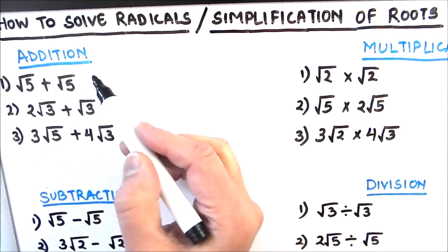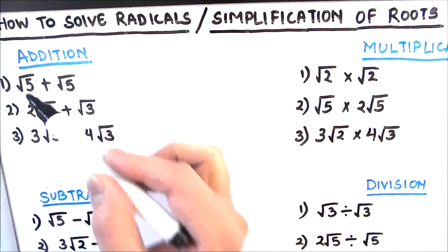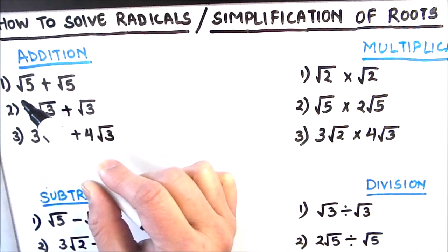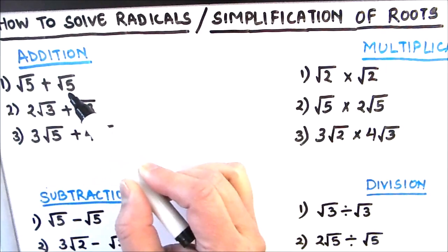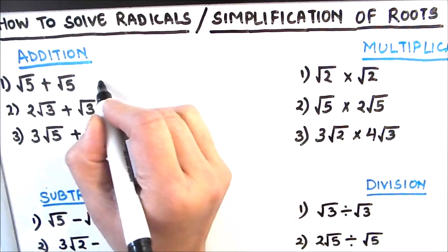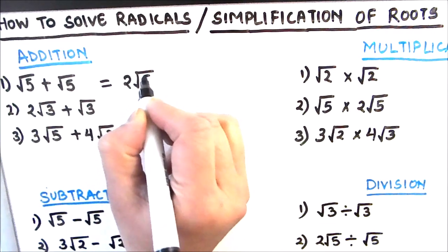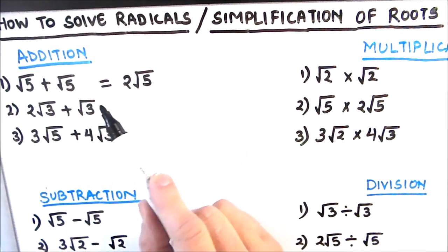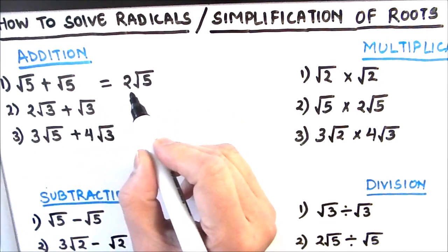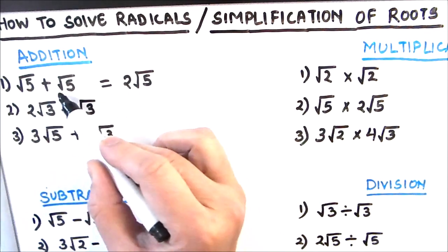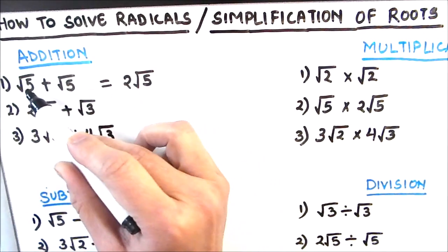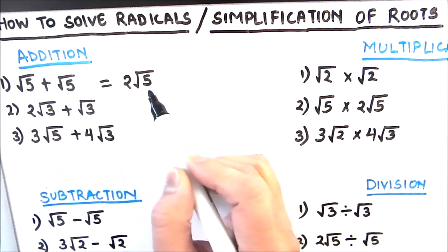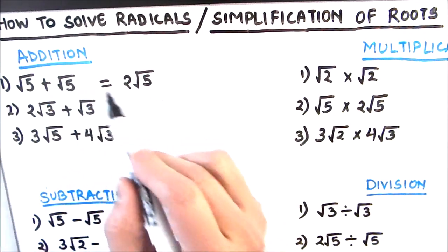First we will learn the addition of roots or addition of radicals. If you have two radicals such as root 5 plus root 5, then the addition of these two radicals will give you 2 root 5. You can consider this the same as the addition of variables — if x plus x is there, then you add and write 2x. Similarly, if root 5 and root 5 is there, you can add directly and write 2 root 5.